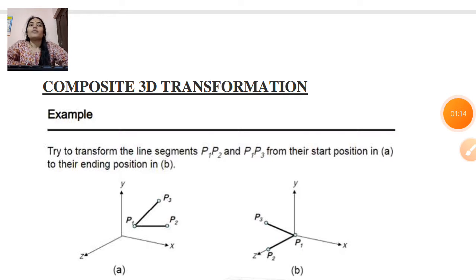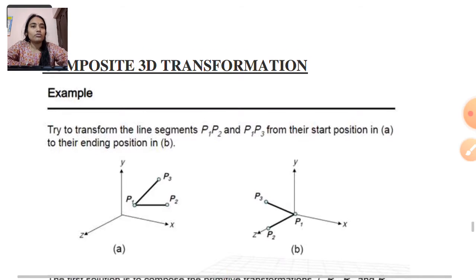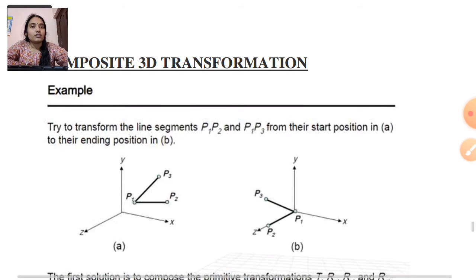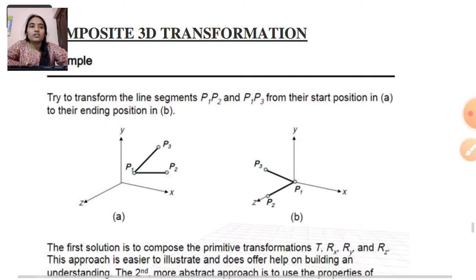So composite 3D transformation — let us take one example, then we will discuss it. In this example, it will transform a line segment P1-P2 and P1-P3 from their start position into their ending position.